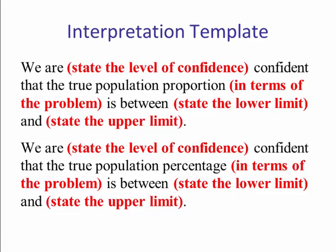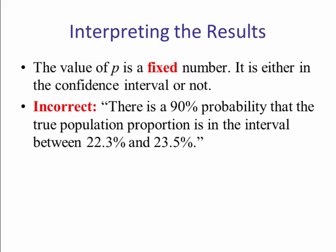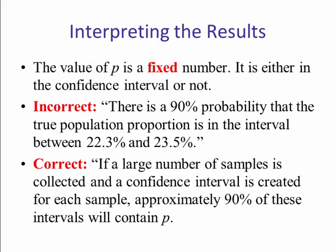Okay, let's look at some misconceptions about the interpretation. Now the value of p is a fixed number. It is either in the confidence interval or not. So it would be incorrect to say there is a 90% probability that the true population proportion is in an interval. What is correct to think about is if a large number of samples is collected and a confidence interval is created for each sample, then approximately 90% of these intervals will contain p. We are just not sure if our confidence interval contains p or not.